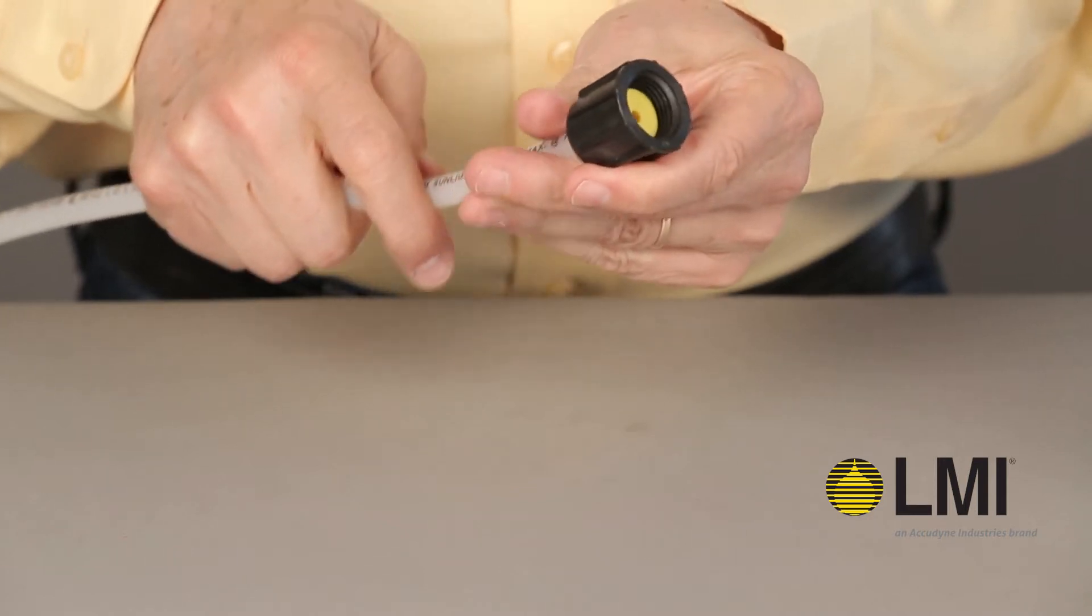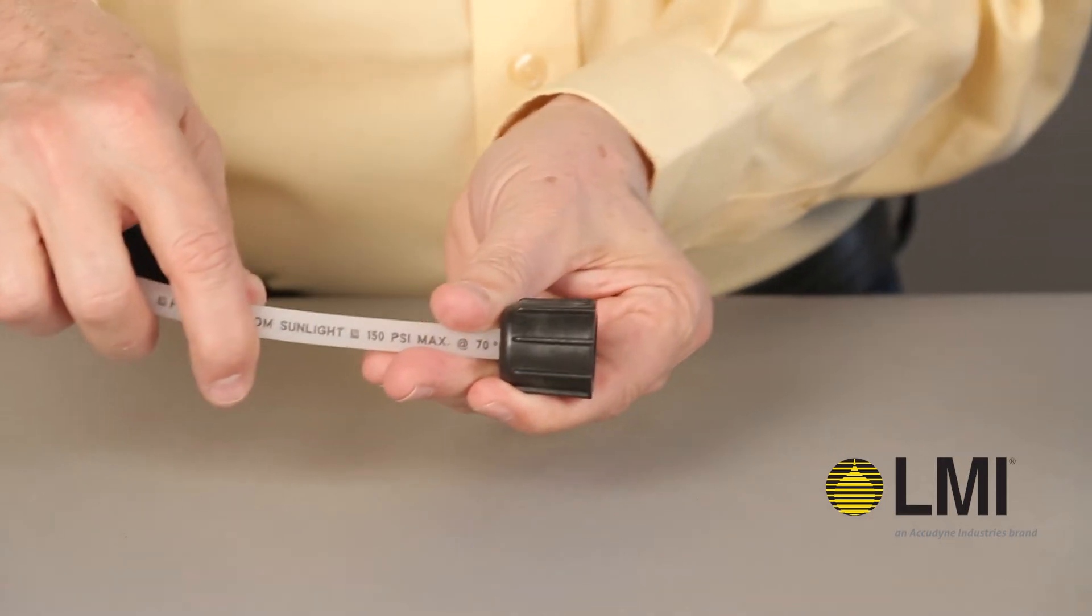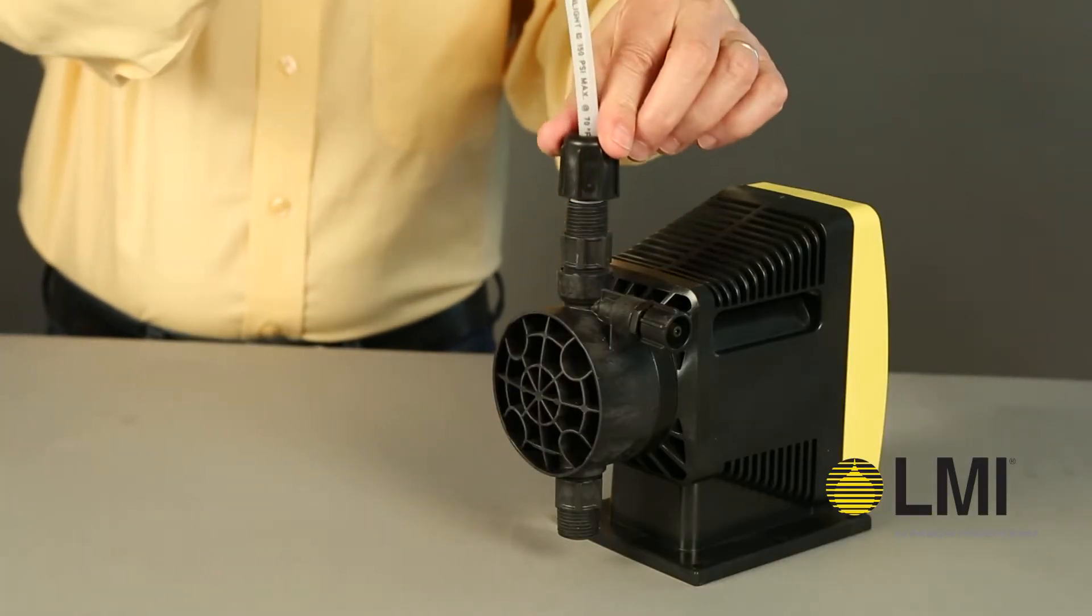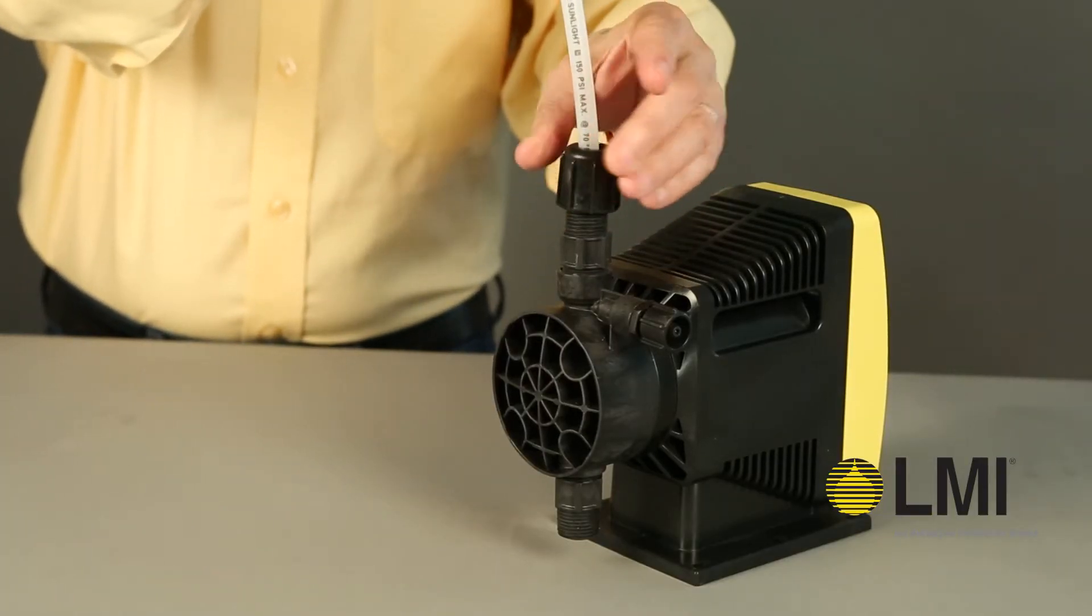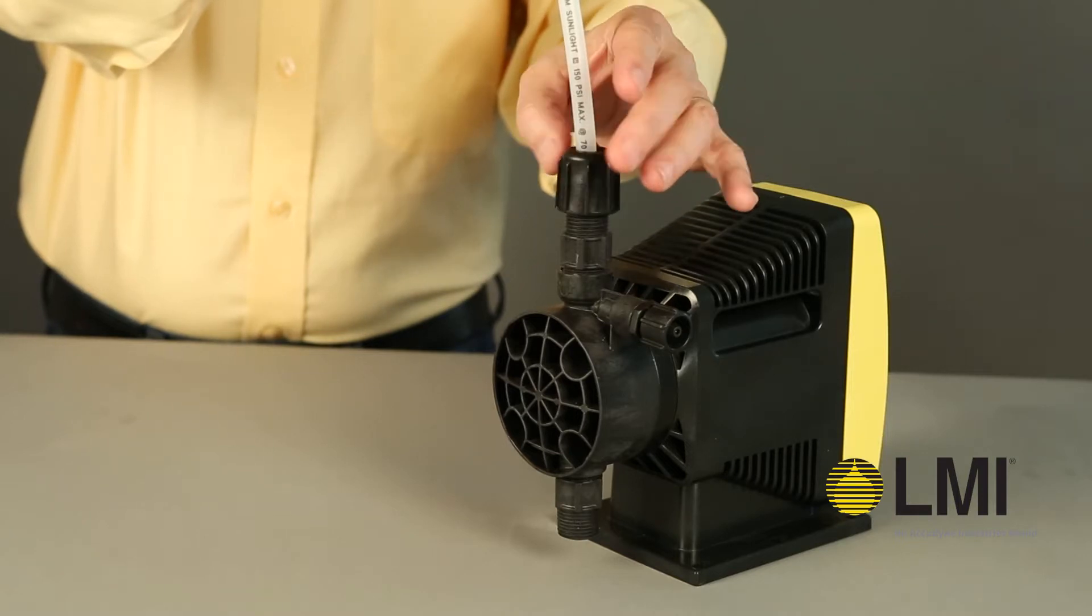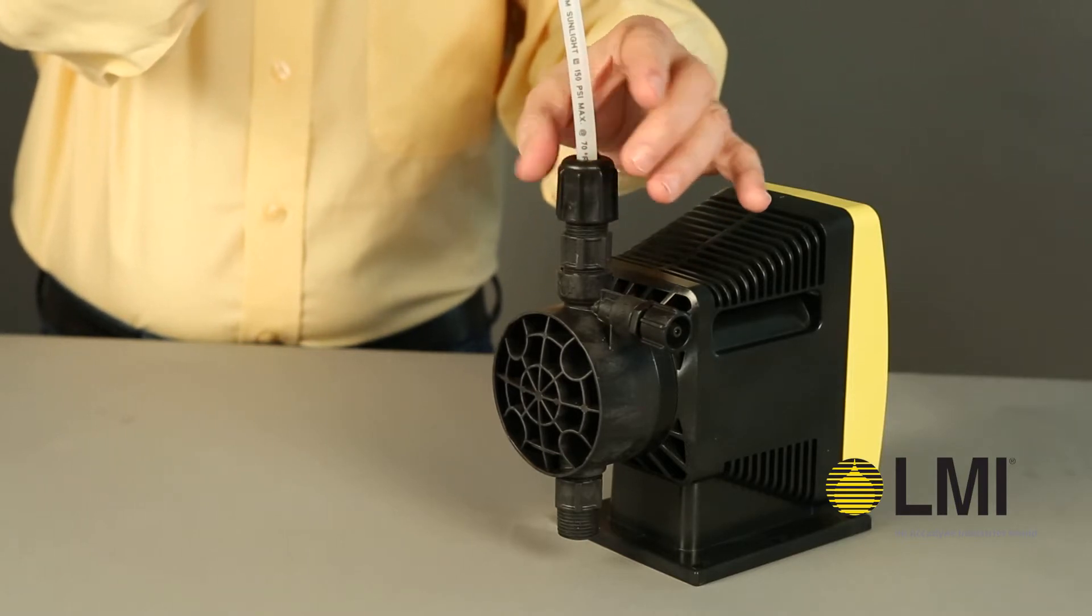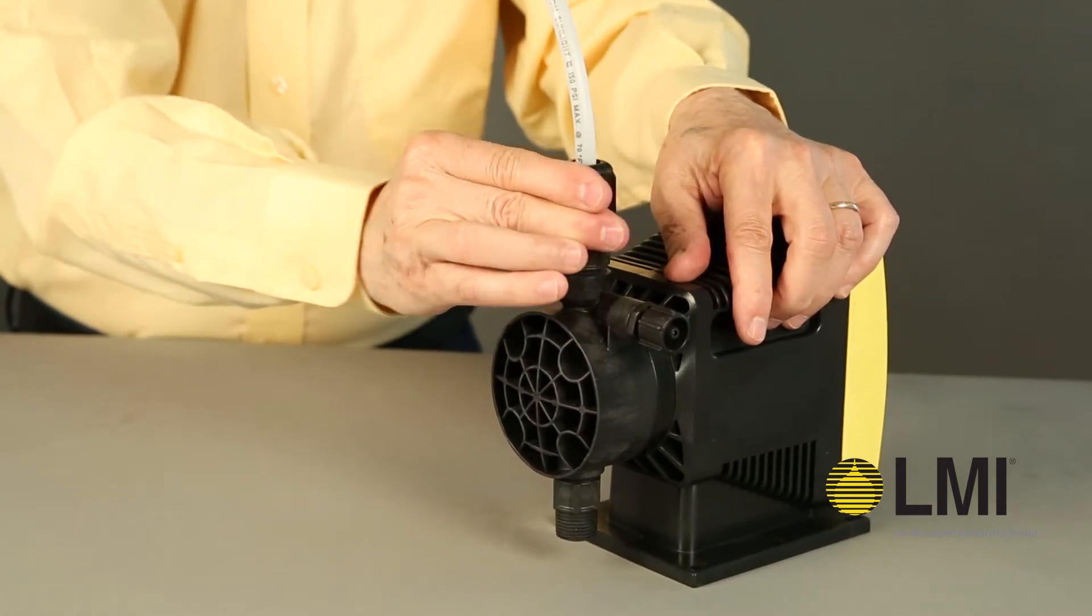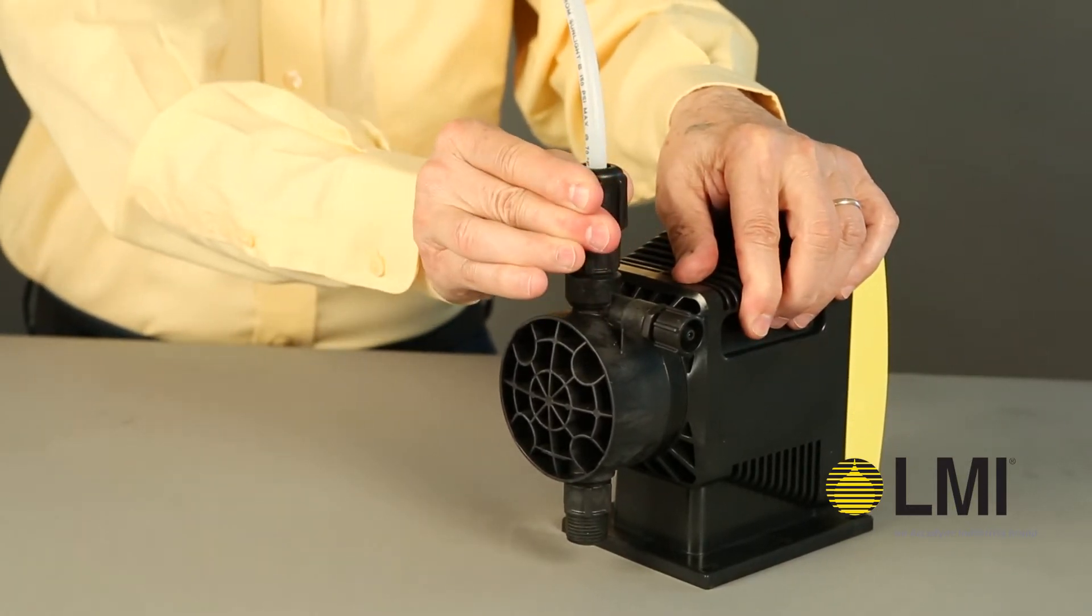Make sure the threads on the coupling nut are visible to ensure proper threading onto the valve fitting. The tubing assembly is now ready to be attached to LMI's standard ½ inch NPT BSP fitting. Ensure the fitting's O-ring remains intact and hand tighten the coupling nut onto the fitting.